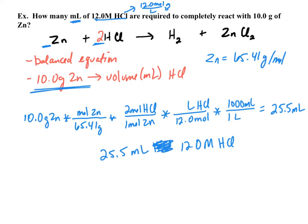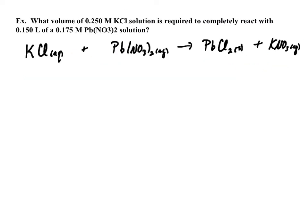Let's try another problem. Next, we're asking what volume of 0.250 molar KCl solution is required to completely react with 0.150 liter of 0.175 molar Pb(NO3)2 solution. Before we start with this, we need to first start, just like we did last time, with a balanced reaction.